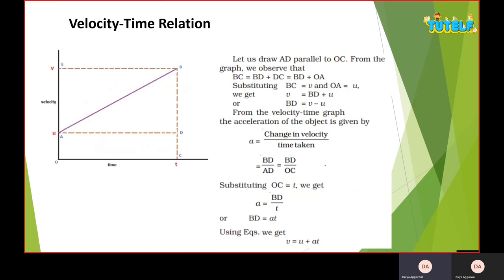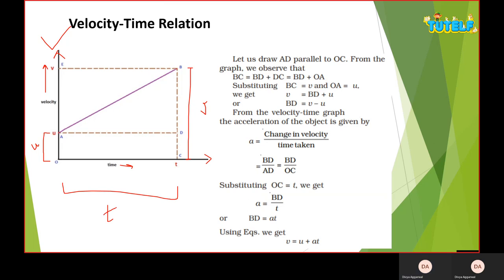Now let's look at the first equation — the velocity-time relation. In an exam, if you are asked for a proof, you first need to draw this graph. The x-axis represents time and the y-axis represents velocity. On the graph, point A shows the initial velocity u. Point B shows the final velocity v, and the total time for this change is taken as t.